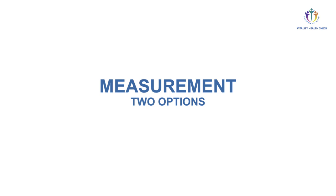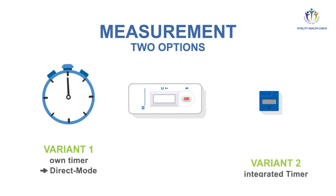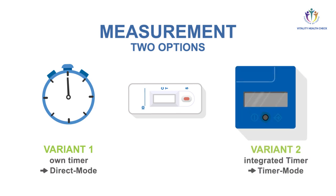There are two options to perform the measurement. One, measurement of the reaction time with your own timer and subsequent readout using the direct mode of the VHC reader. Two, use the timer mode of the VHC reader with automatic measurement at the end of the 15 minute reaction time.